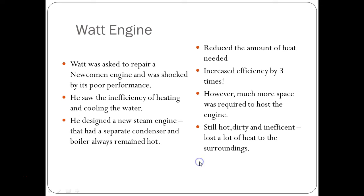The Watt engine: James Watt was asked to repair a Newcomen engine and was shocked by its poor performance, noting very low efficiency in heating and cooling the water. He designed a new steam engine with a separate condenser, while the boiler always remained hot. This reduced the amount of heat needed and increased efficiency by three times. However, much more space was required to host the engine, and it was still hot, dirty, and inefficient, losing a lot of heat to its surroundings.